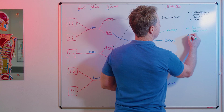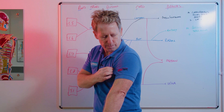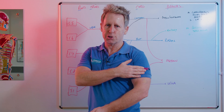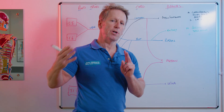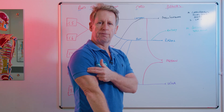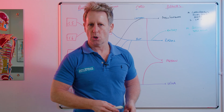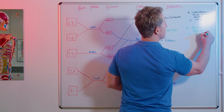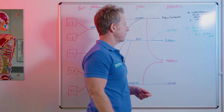The sensory component mainly supplies the area where a military badge would be — they call it the regimental badge area. I dislocated my shoulder many years ago and when it was relocated, the nurse did a neurological test and asked if I could feel that area. I said no, and she said more than likely I had damaged the axillary nerve because of the shoulder dislocation.